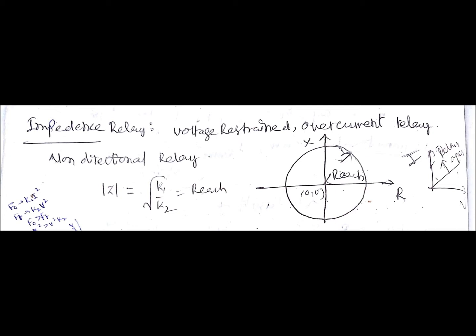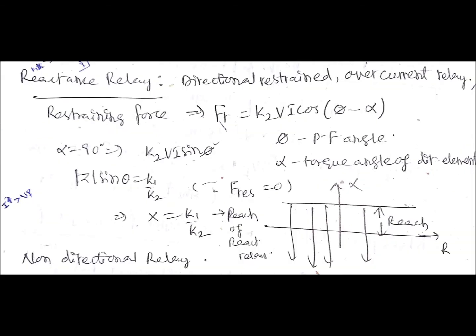One more diagram is given with the x-axis as V and y-axis as current I. We consider the x-axis as the restraining quantity (voltage) and y-axis as the operating quantity (current). If you take the plot it is a linear line, and if the current is towards the arrow side shown in the diagram, the relay will operate.